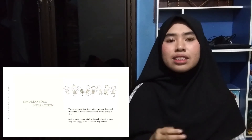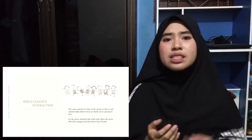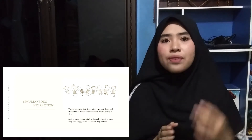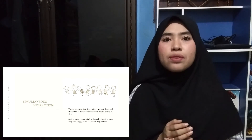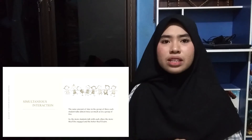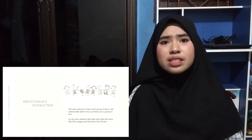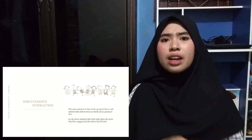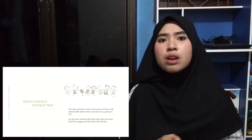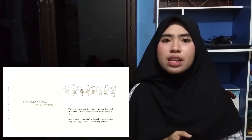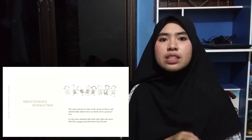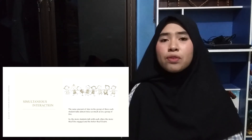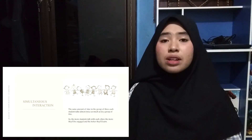The last principle is Simultaneous Interaction. It is the most powerful tool we have for increasing active engagement. Kagan defines Simultaneous Interaction as the percentage of learners overtly engaged at any one moment. This is an important definition because the percentage figure tells us clearly that a group of four will create more interaction than a group of five, and that pair work doubles active participation compared to work in a group of four.